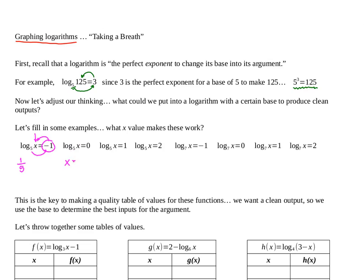For the next one, what would I put in to get a clean output of 0? I'd want 5 to the 0 power, so that's a 1. For a perfect output of 1, I'd want 5 to the first power — that's a 5. And to get a clean output of 2, I'd want a 25 in there, since 25 is 5 squared. These are x-values — inputs chosen so we get nice clean perfect exponents as outputs.